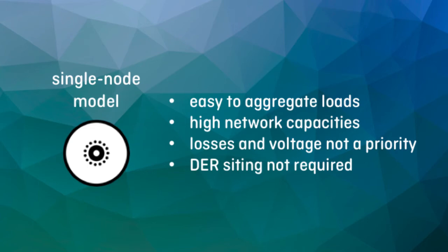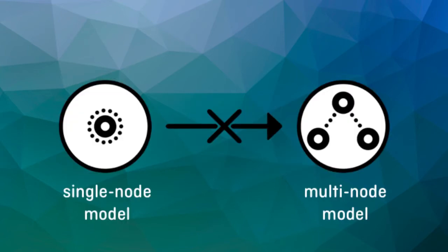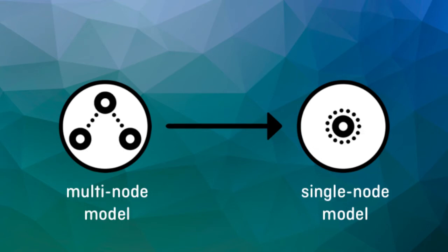If you select a multi-node model, you will need to define the network topology as part of the workflow. We'll provide some additional details on this process in a later video. At this time, DIRCAM doesn't allow users to switch from a single node project to a multi-node project after the model has initially been created. Going in the opposite direction, if you need to, a multi-node project can always be simplified down to a single node by removing all but one node and aggregating site data there. Please keep these facts in mind whenever starting a new project.